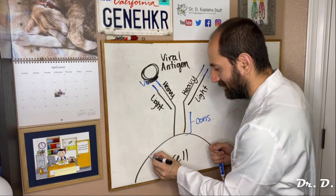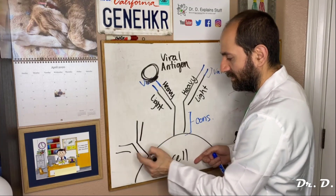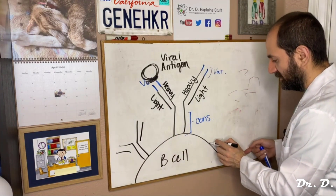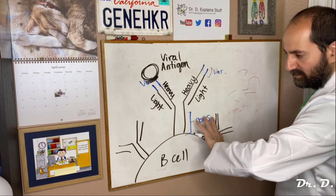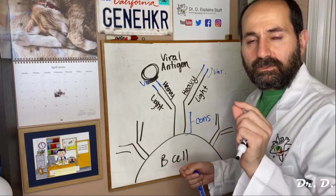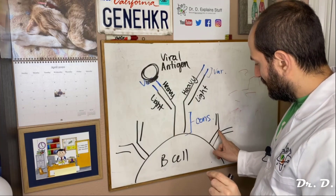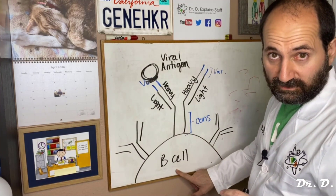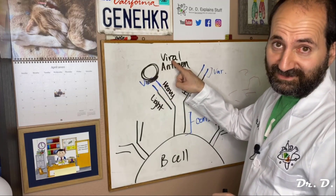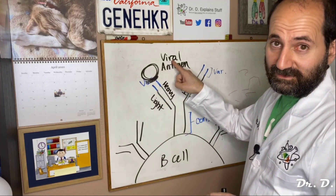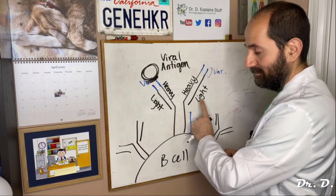Each B cell has many antibodies on its surface, but they're all clones of one another. Every single antibody on the surface of this B cell is a clone — every single one will recognize that viral antigen. So each B cell has many, many copies of the exact same key.